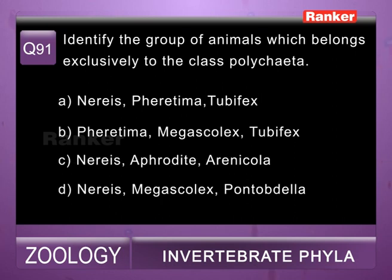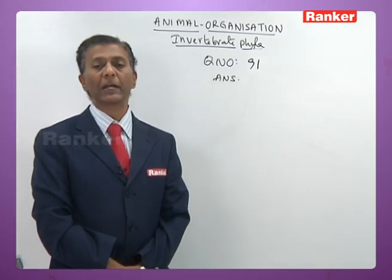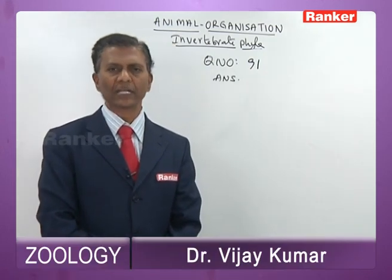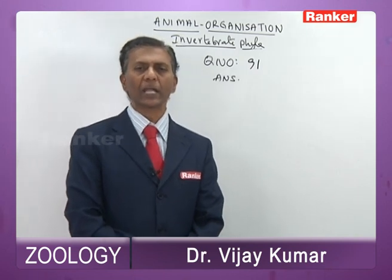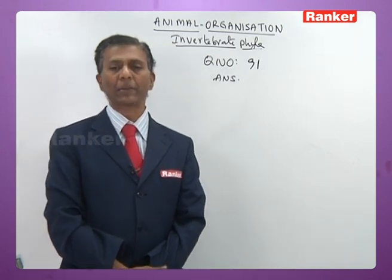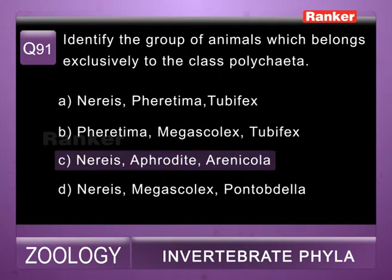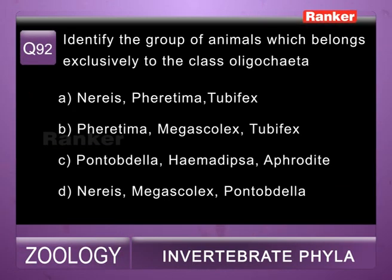Question ninety-one: identify the group that belongs exclusively to class Polychaeta — a) Nereis, Pheretima, Tubifex (wrong — Pheretima and Tubifex are oligochaetes), b) Pheretima, Megascolex, Tubifex (wrong — all oligochaetes), c) Nereis, Aphrodite, Arenicola (correct — all Polychaeta), d) Nereis, Megascolex, Pontobdella (wrong). So ninety-first question correct answer is c.